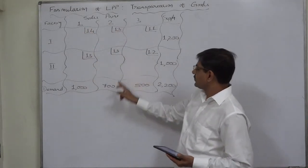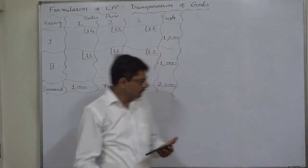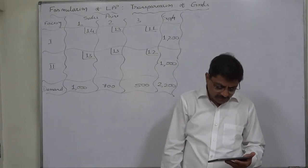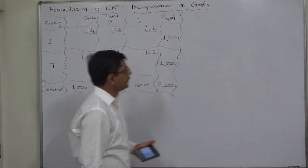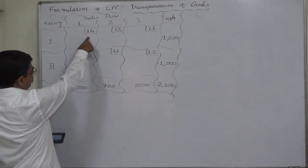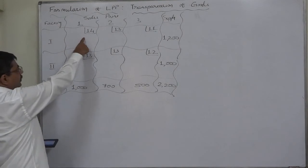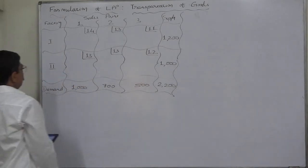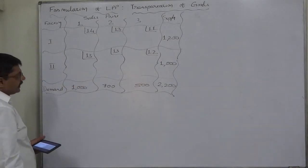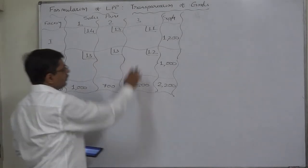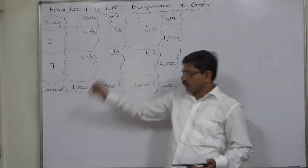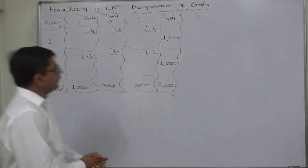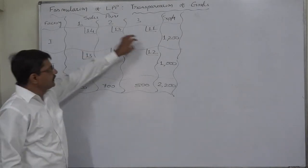The daily demands at the 3 sales points are 1000, 700, and 500 units respectively — sales point 1 demands 1000 units, sales point 2 demands 700 units, sales point 3 demands 500 units. So this is a balanced transportation problem. The shipping cost in rupees per unit: it costs 14 to transport 1 unit from factory 1 to sales point 1, 13 from factory 1 to sales point 2, 11 from factory 1 to sales point 3, and 13, 13, and 12 rupees per unit from factory 2.